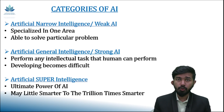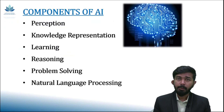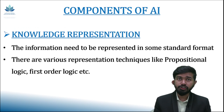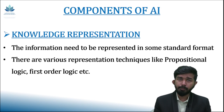Now let us discuss about the components of AI. Basically, there are six components. First is perception — taking inputs from the environment using sensors. The agent will scan the environment and take input from it. Next is knowledge representation — the perceived information has to be presented in some standard format. There are various representation techniques like first-order logic and propositional logic.